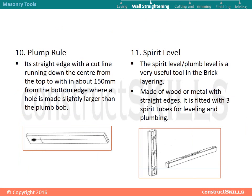Wall straightening tools: plumb rule. The plumb rule is a straight edge with a cut line running down the center from the top to within about 150 mm from the bottom edge, where a hole is made slightly larger than the plumb bob.